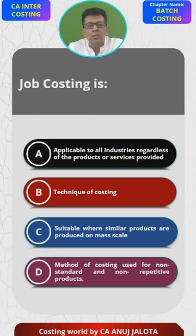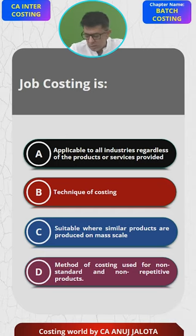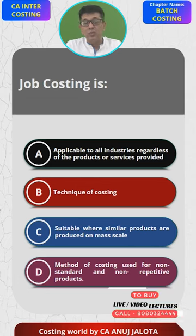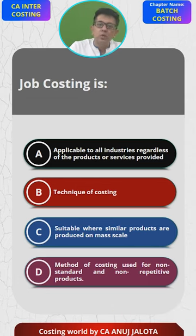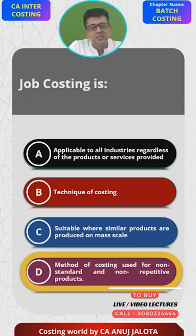Option D: method of costing used for non-standard and non-repetitive products — yes. The answer is D. For example, suppose there is a carpenter who works in your home. You tell him to make your furniture, and he also works in my home and I tell him to make my furniture. For him, each and every order will be one job, and all these things will be different for each customer. So the answer is D — that is the correct answer.